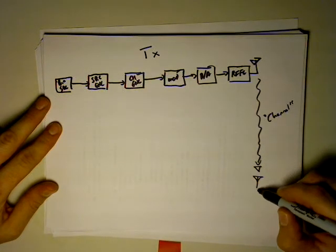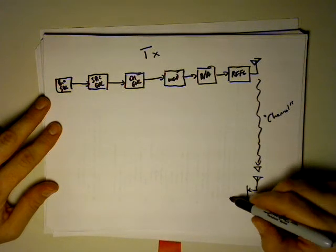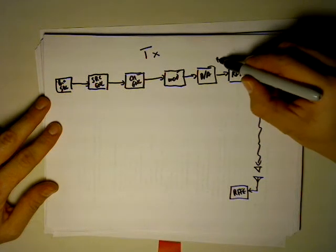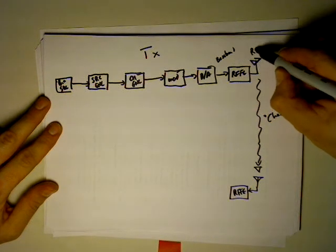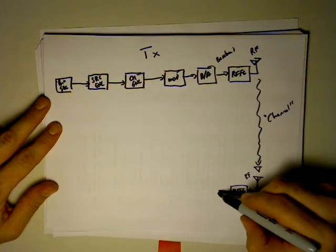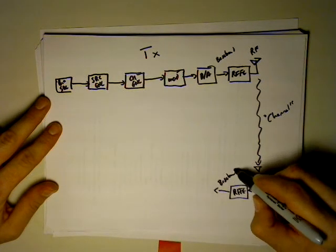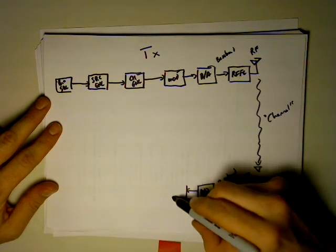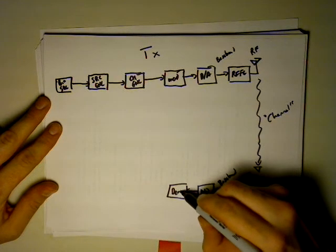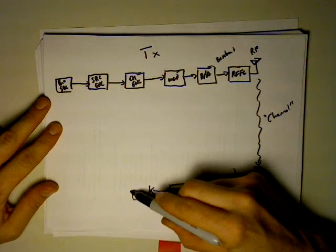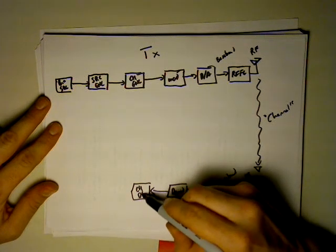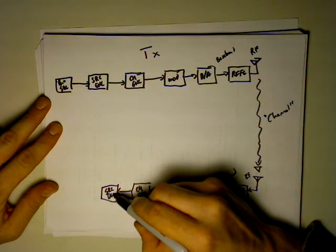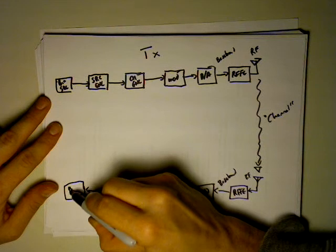The receiver, hopefully listening, picks it up. The RF front-end brings it down from RF frequencies, converts it back down to baseband. The baseband is analog-to-digital converted, demodulated, channel decoded, source decoded, and fed into a binary sink.